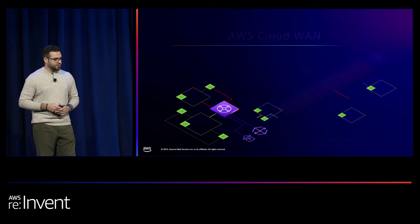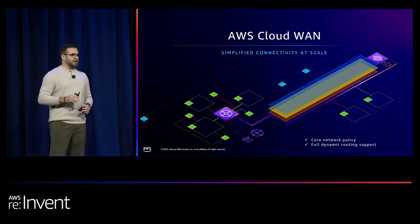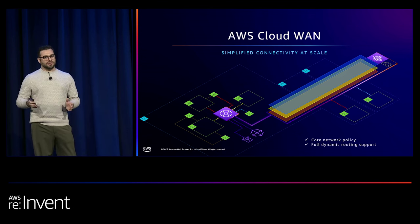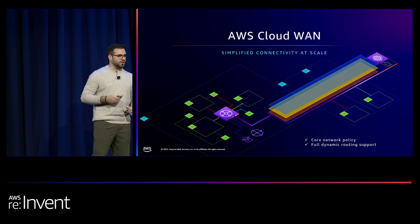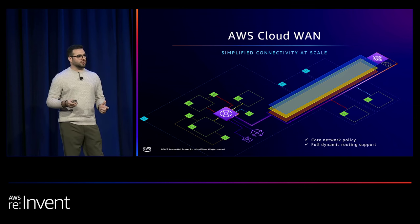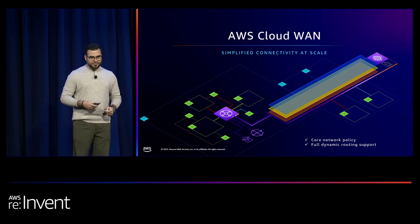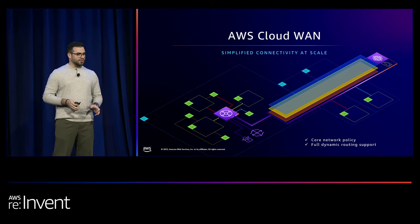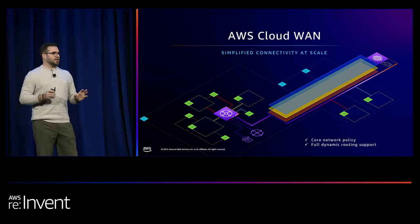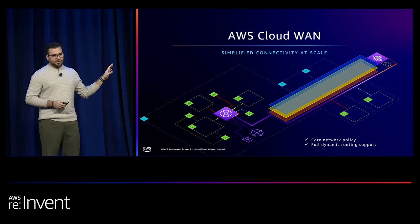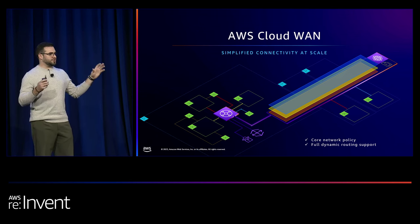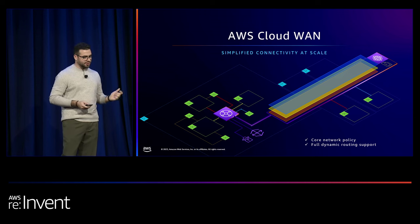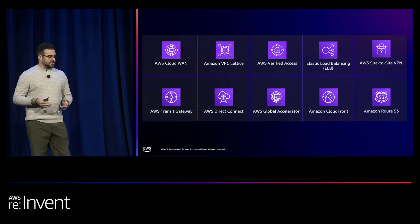Last year during re:Inforce, we announced AWS Cloud WAN. It's a service built on the same technology as Transit Gateway, and it simplifies connectivity at a global scale. We also introduced our new vision for networking services — intent-based networking — where you tell us how you want your network to look like, and we will build it in the background for you, with backwards compatibility with Transit Gateway. This combination, where the most common Transit Gateway pattern that connects site-to-site VPNs integrates with the new version of global networking on AWS, is AWS Cloud WAN.